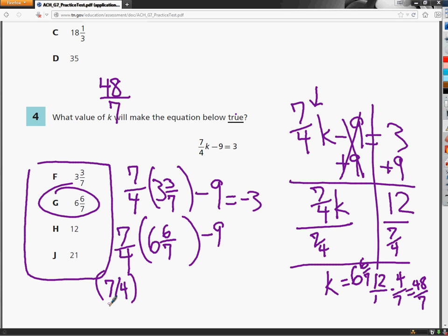Parentheses, 7 fourths. Parentheses, 6 plus 6 over 7. Got to close that out with a double. Minus 9. So I'm going to type all that in really fast. Hopefully I don't make any mistakes. And it gives me 3 when I type all that in. And it's supposed to give me 3. So I know that 6 and 6 sevenths is the correct answer.